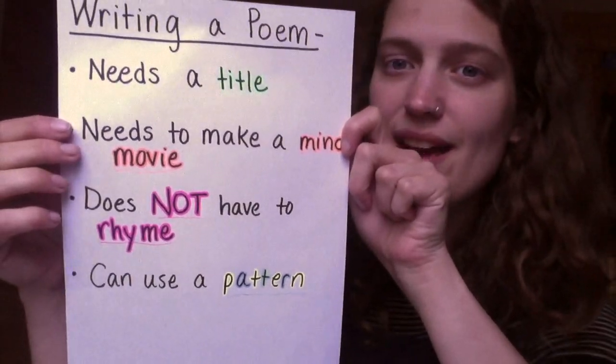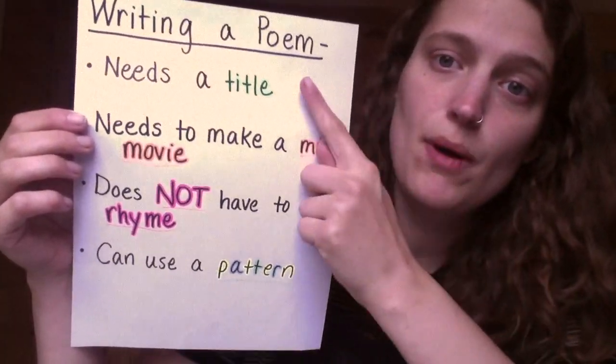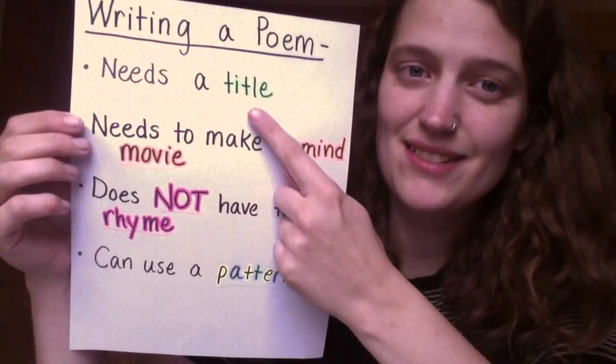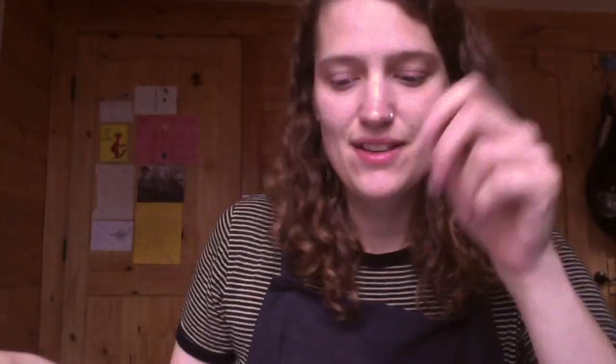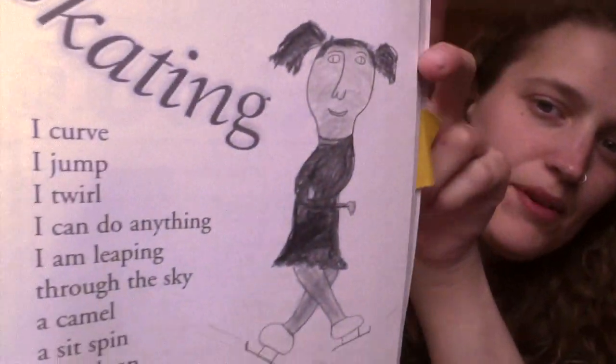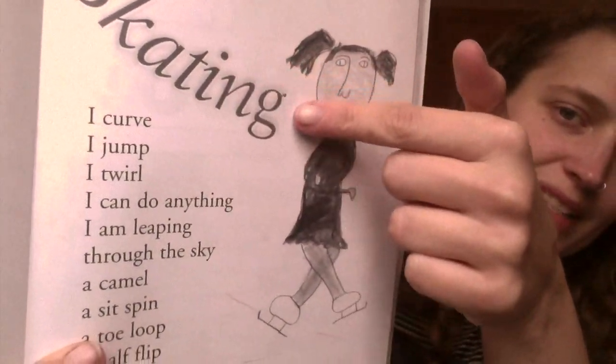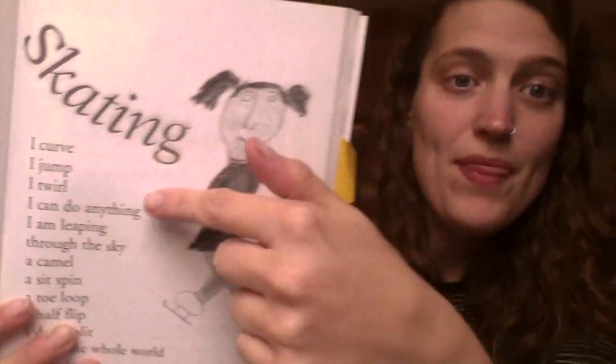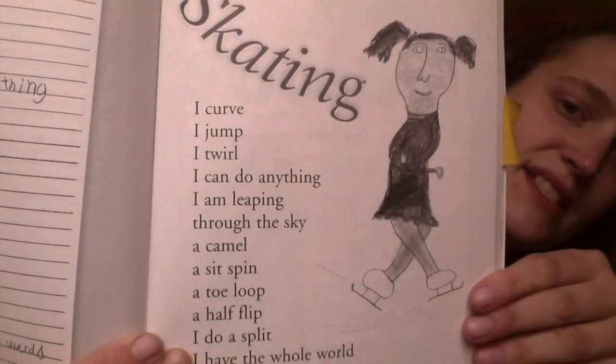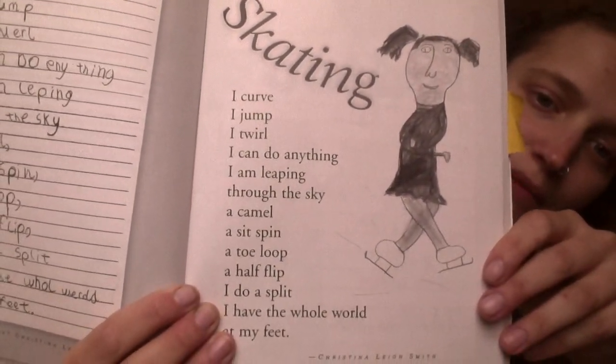Here are some things that poems have to have. A poem needs a title. A title, as you guys know, comes at the top of a poem and it tells you what that poem is about. So I'm going to be reading this poem called Skating. It was written by a first grader like you. And I can tell that Skating is the title because it's nice and big at the top of the page.